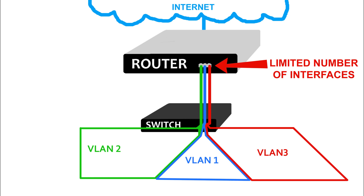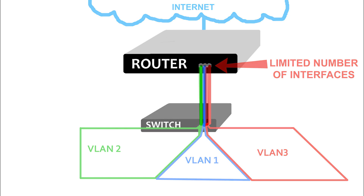The most often cited reason for using router on a stick is that you are using more than 2 or 3 VLANs on your network. You're capable of having up to 4,096 or more VLANs on a switch configuration. If this is the case, having a separate cable connection, router interface, and switch interface for each of those VLANs becomes virtually impossible. Enter router on a stick.